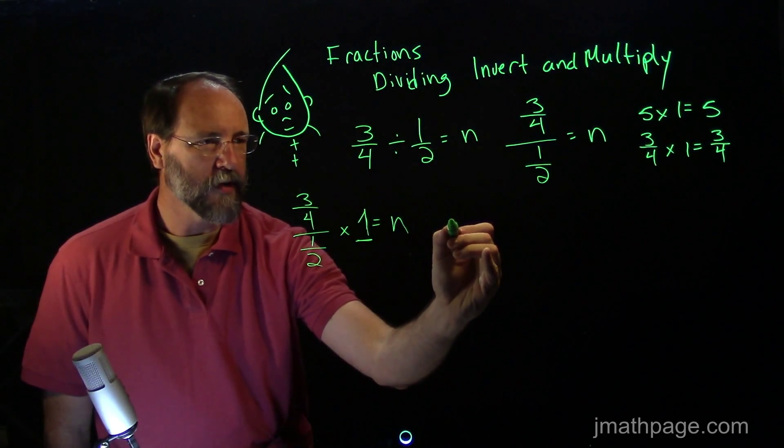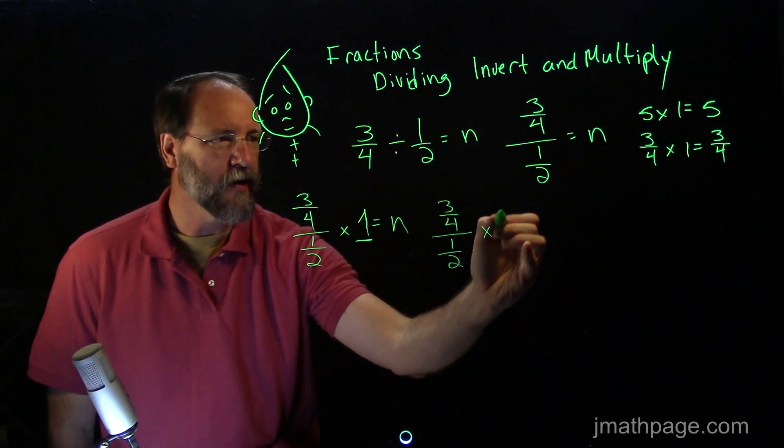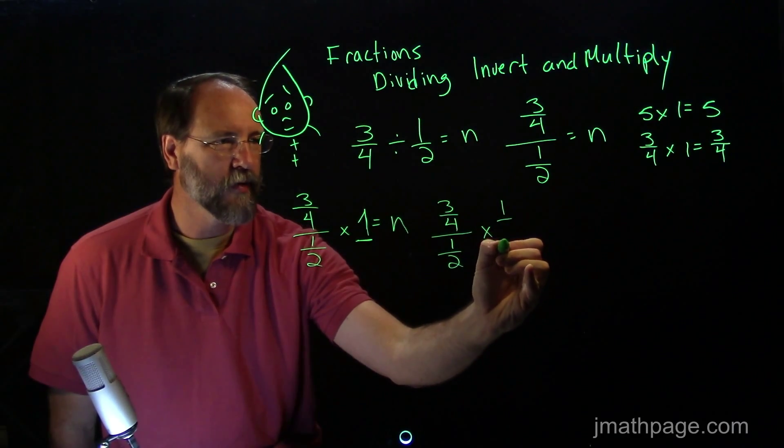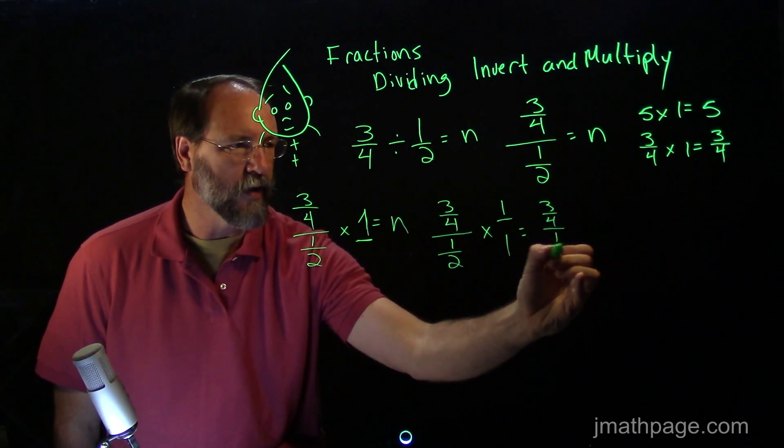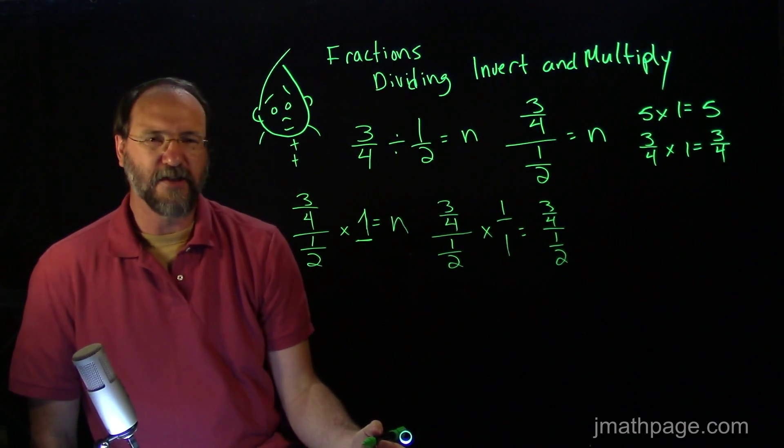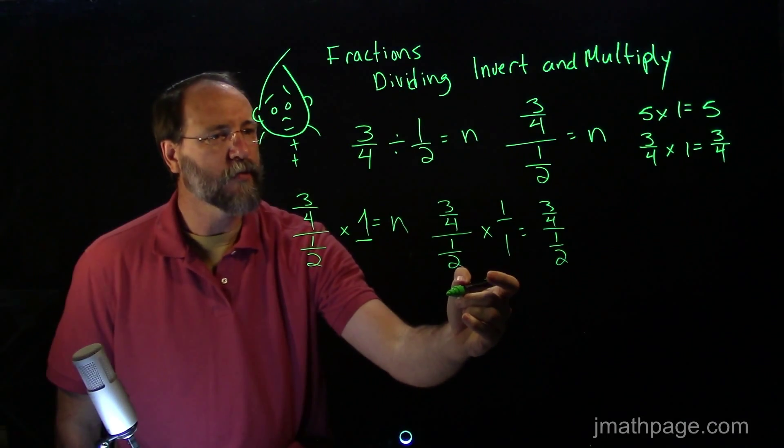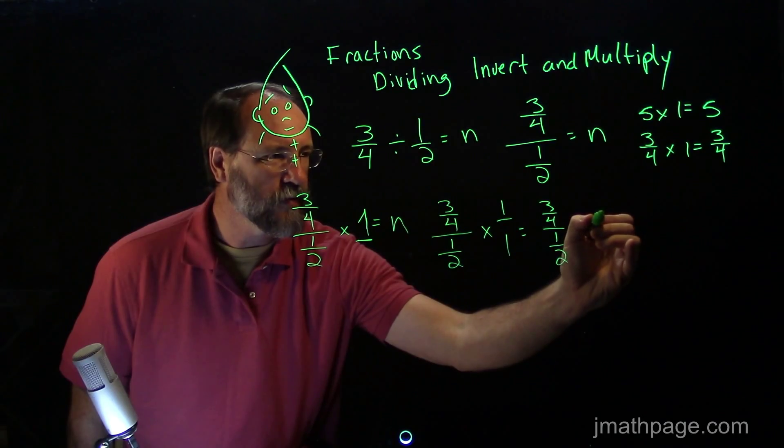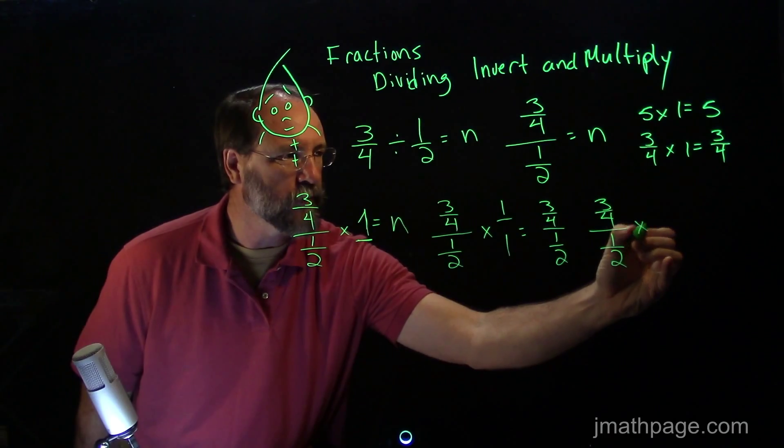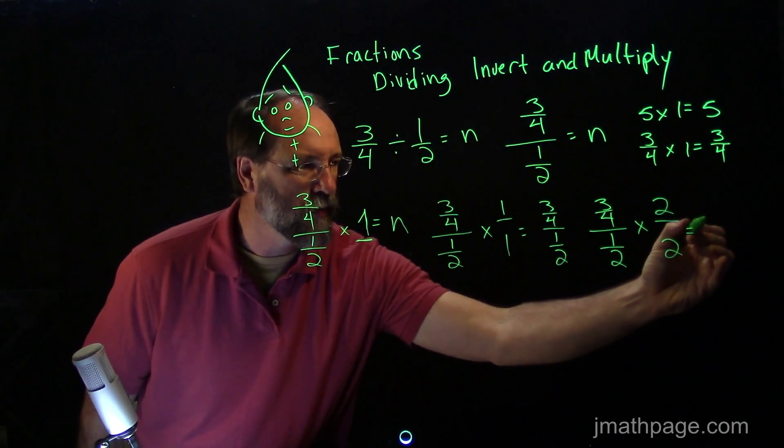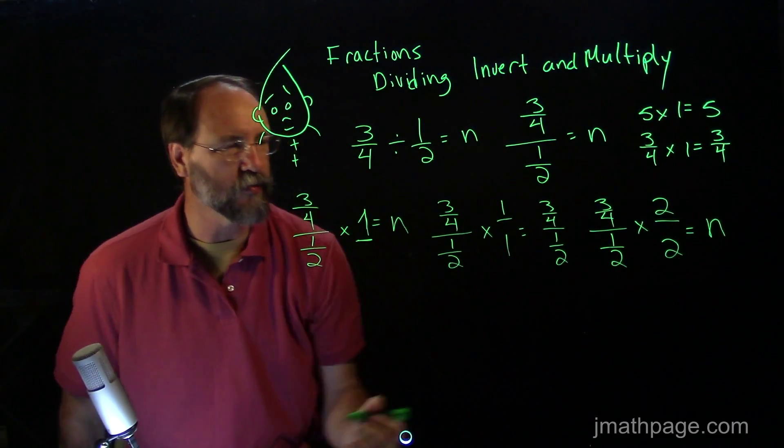So you would probably agree with me that if I did 3 fourths divided by 1 half and I multiplied it by, say 1 over 1, I'd still have 3 fourths divided by 1 half. Everything's really good so I haven't changed any of the rules. Now I'm going to change something though. Instead of 3 fourths times 1 over 1, what if I did 3 fourths divided by 1 half times 2 over 2? It should still be the same thing because we know that 1 over 1 is 1. We know that 2 over 2 is 1 as well.